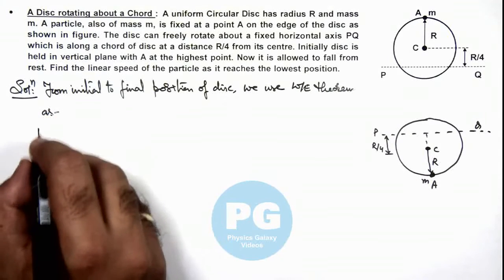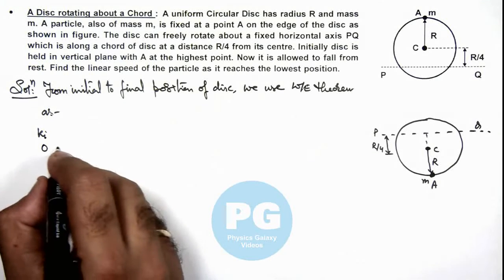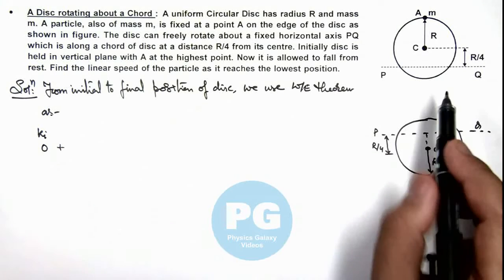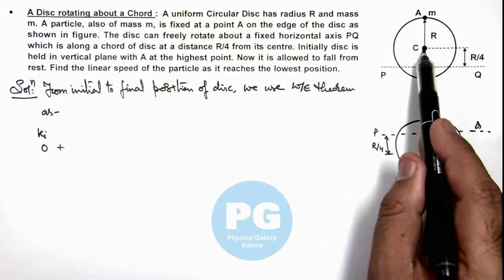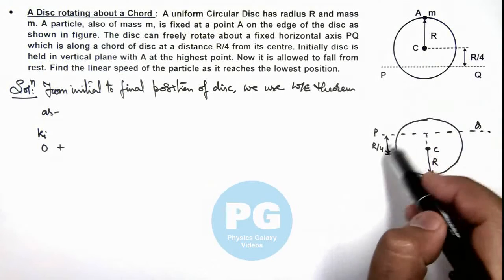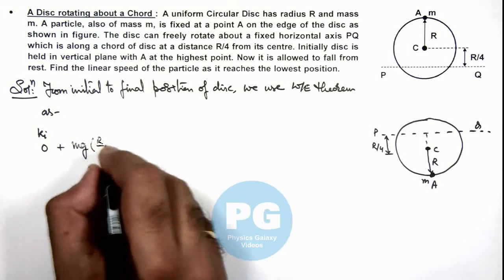Plus, the work done by gravity on the disc will be, as center of mass of disc falls by distance R by 2, so we can write it as mg multiplied by R by 2.